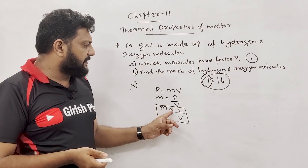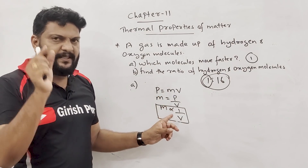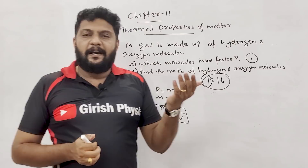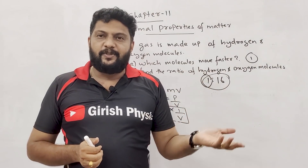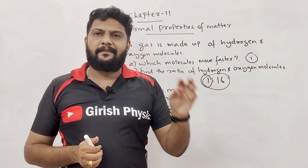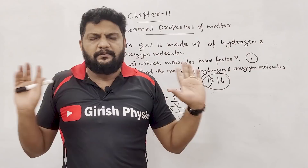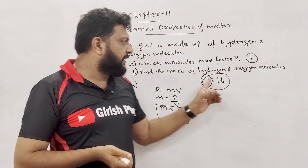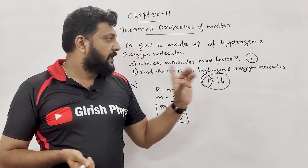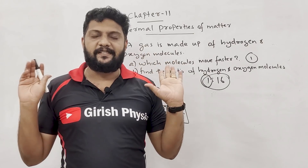If M is equal, M is proportional to 1 over V — mass is inversely proportional to velocity. Hydrogen gas has less mass. The ratio is 1 to 16: hydrogen to oxygen molecules is 1 to 16.